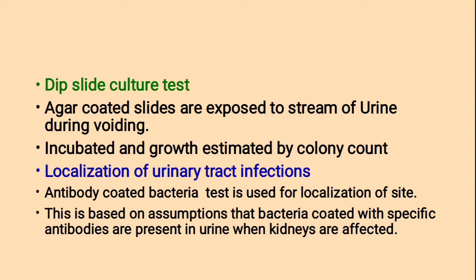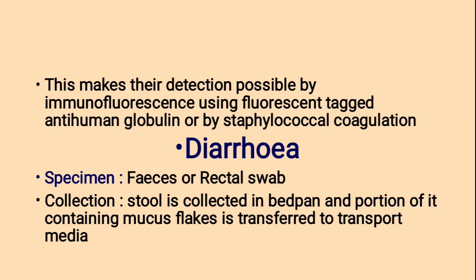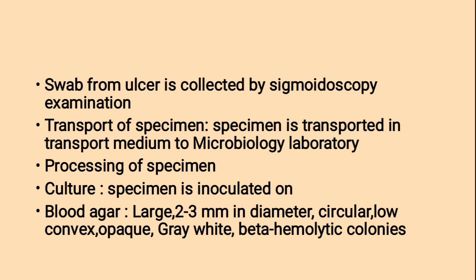Localization of urinary tract infection: Antibody-coated bacteria test is used for localization of site. This is based on the assumption that bacteria coated with specific antibodies are present in urine when kidneys are affected, making detection possible by immunofluorescence using fluorescent-tagged anti-human globulin or by staphylococcal coagulation. Diarrhea specimen: fecal or rectal swab. Collection: stool is collected in a bedpan and the portion containing mucus flakes is transferred to transport media; swab from ulcer is collected by sigmoidoscopic examination.